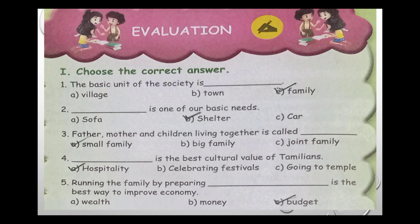Second question: dash is one of our basic needs. The answer is shelter. Shelter is one of our basic needs. Third question: father, mother and children living together is called dash. The answer is small family.